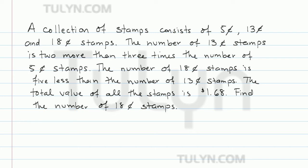A collection of stamps consists of 5 cent, 13 cent, and 18 cent stamps. The number of 13 cent stamps is 2 more than 3 times the number of 5 cent stamps. The number of 18 cent stamps is 5 less than the number of 13 cent stamps. The total value of all the stamps is $1.68.